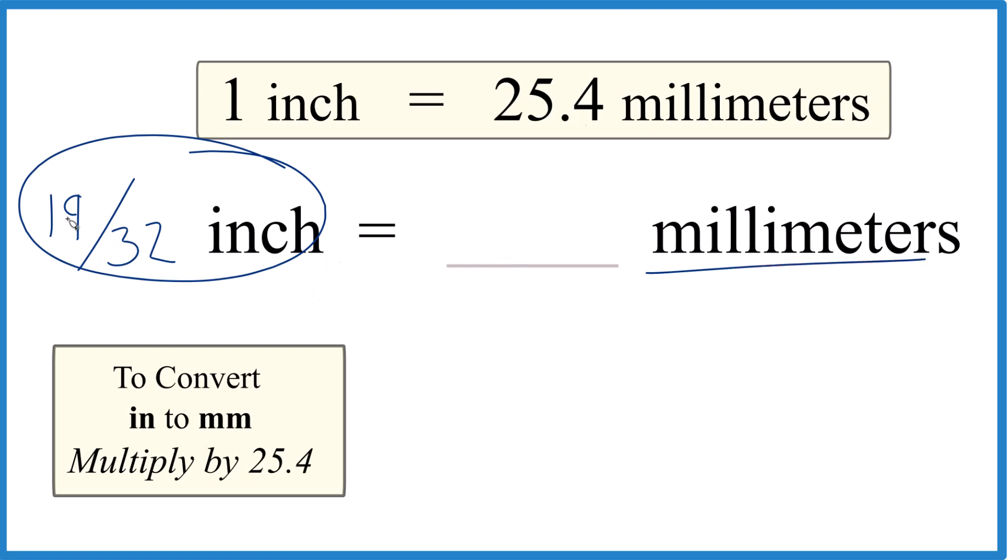Essentially what we'll do is just take 19/32 here and we're going to multiply that by 25.4. So we go from inches to millimeters, multiply by 25.4, that's because 1 inch equals 25.4 millimeters.